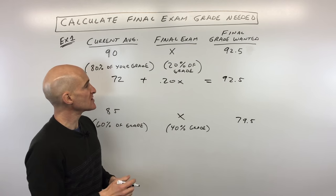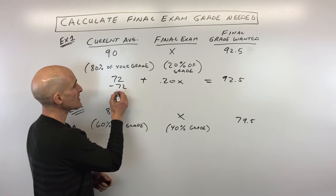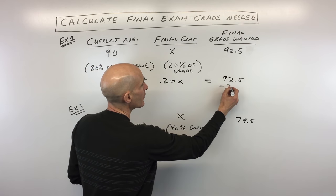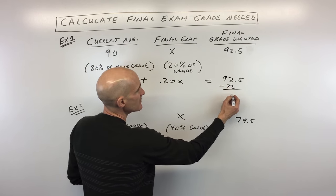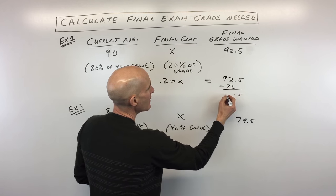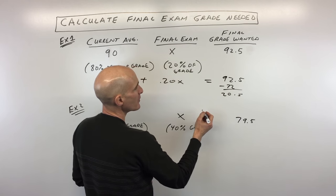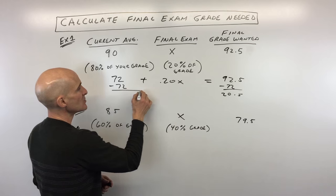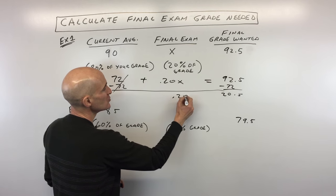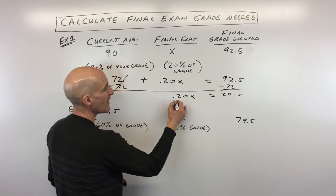Let's go ahead and do this on our calculator. We're going to subtract 72 from both sides of our equation. So that leaves us with how much? We've got 20.5. And then you can see over here, these are going to cancel, we get 0.20x equals 20.5.